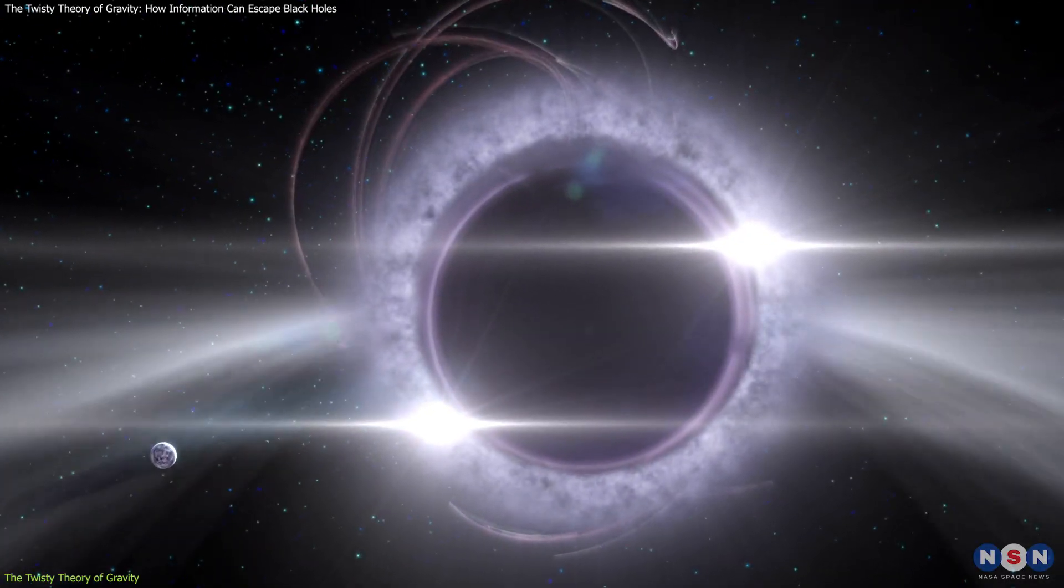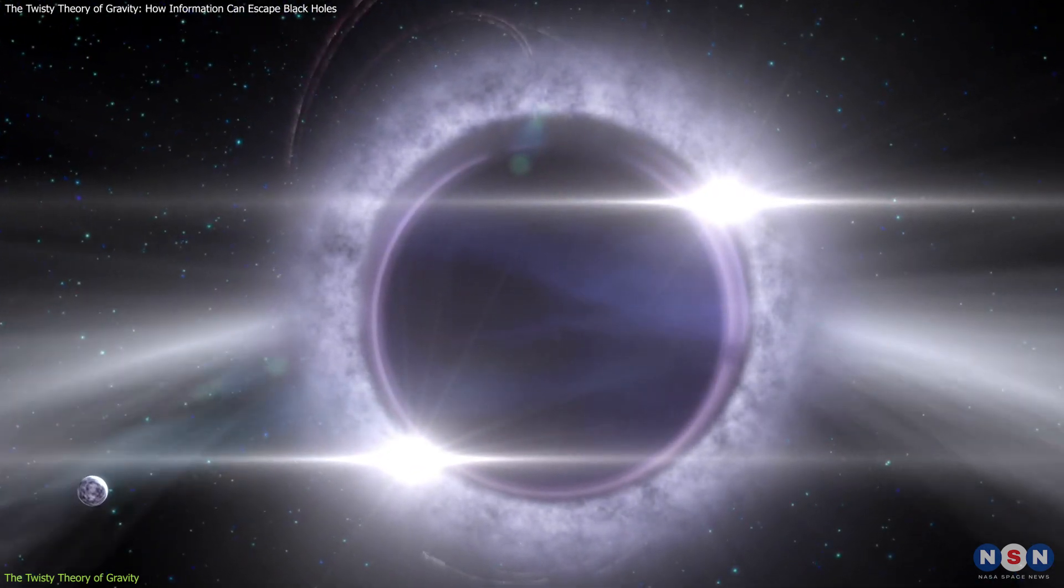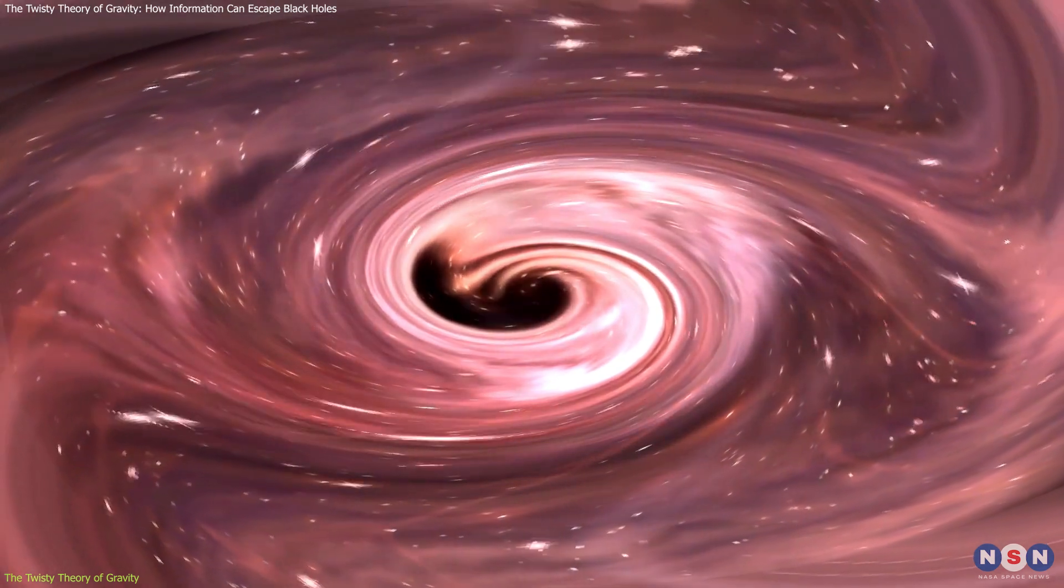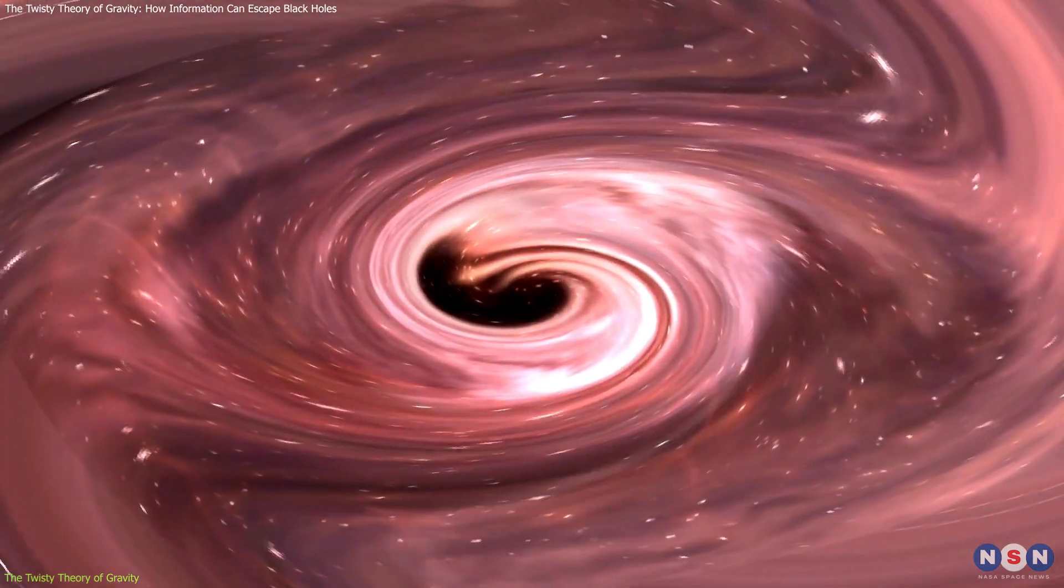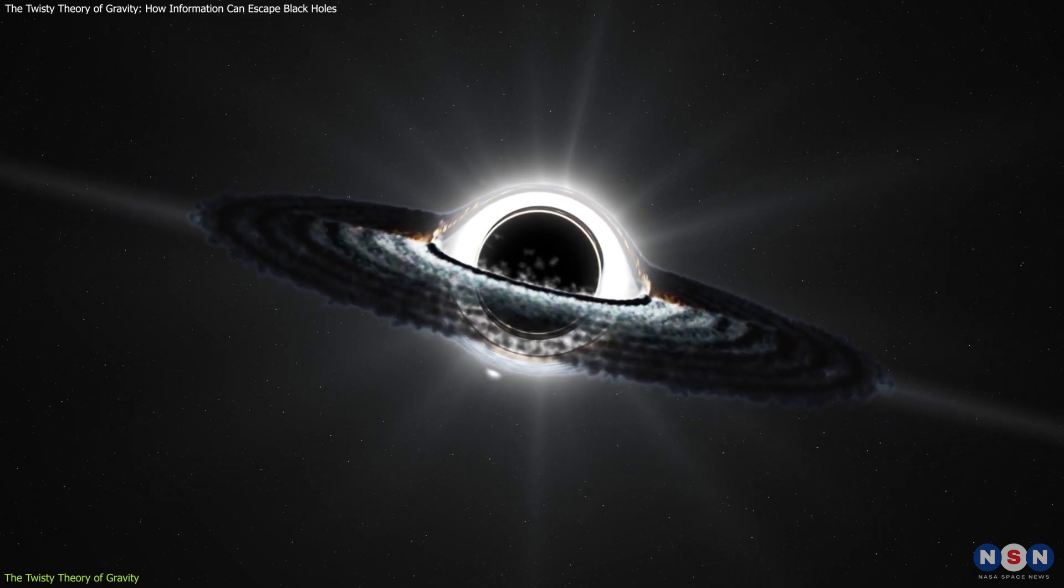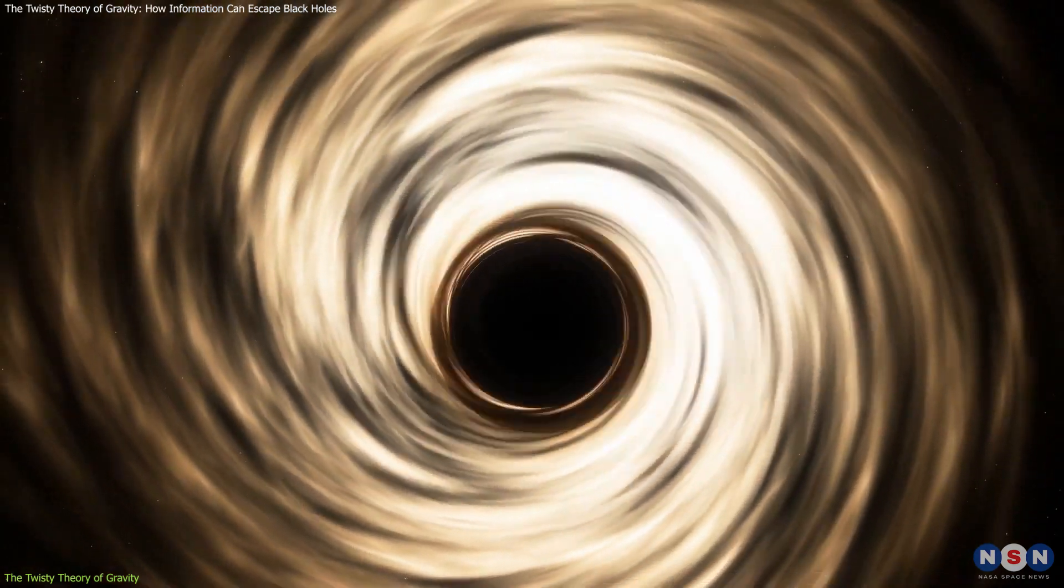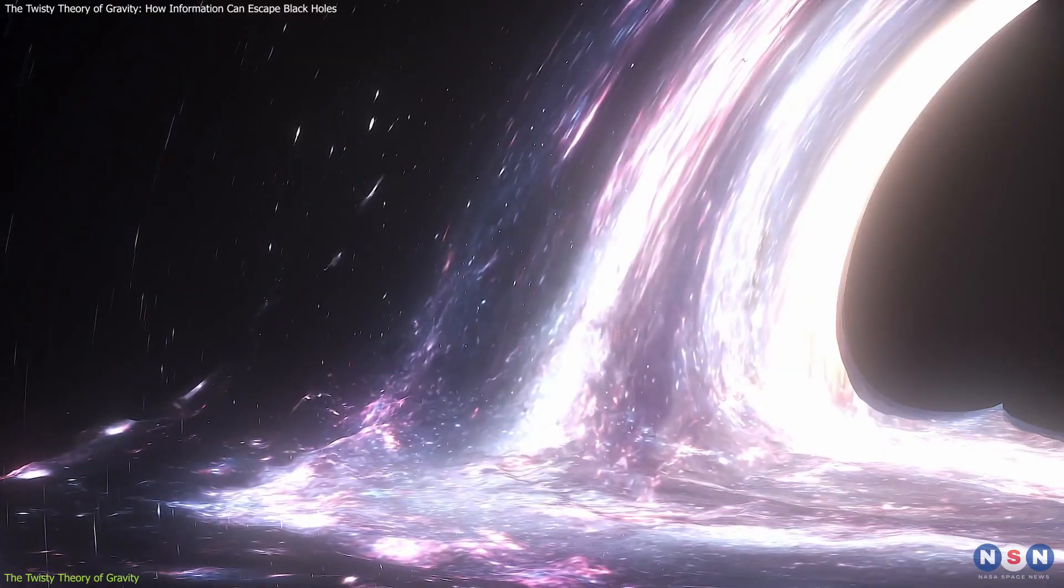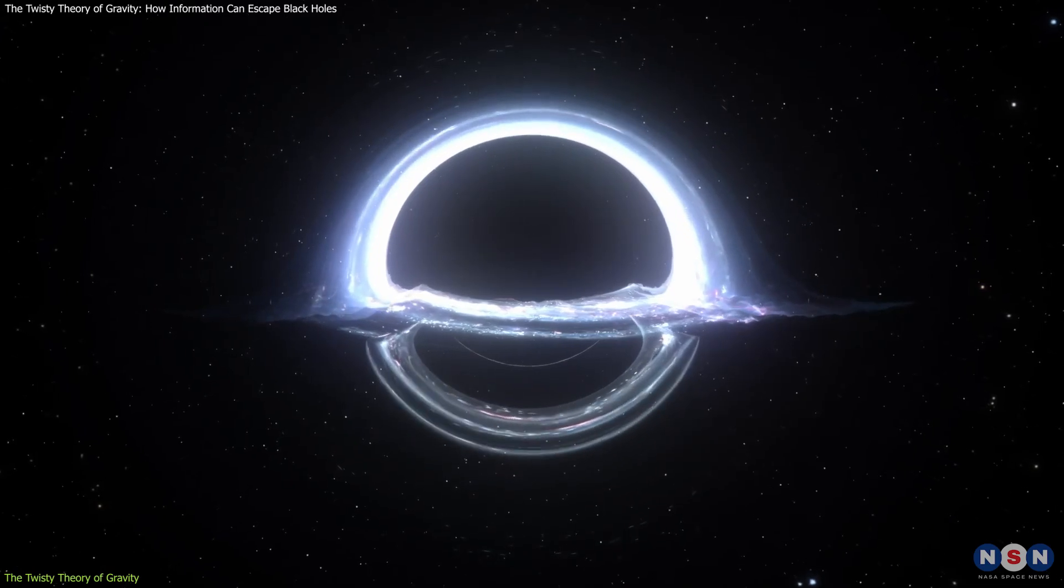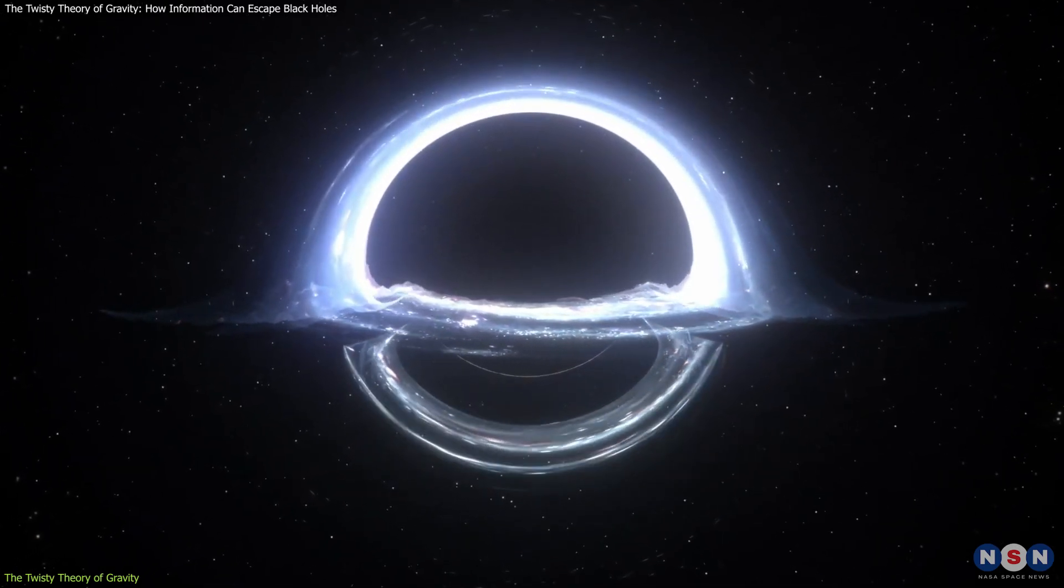These twisters are the mathematical objects that describe the twisting of light rays around space-time. They can capture both the geometry and the dynamics of space-time in a unified way, and they can also describe quantum phenomena such as spin and entanglement. The new theory suggests that twisters are the fundamental degrees of freedom that encode information on black hole surfaces, and that they can be used to construct a quantum field theory that corresponds to realistic black holes.